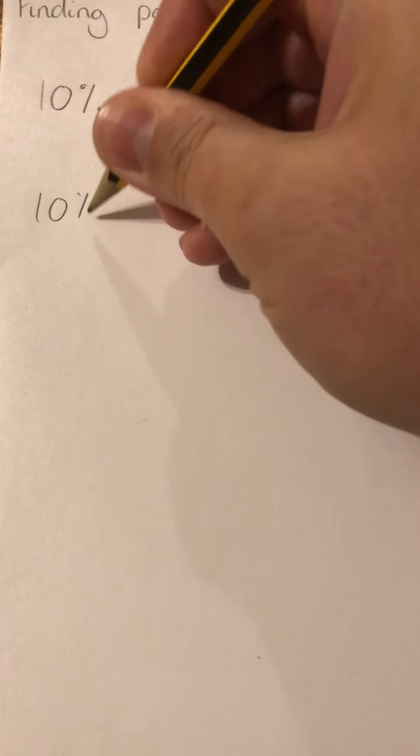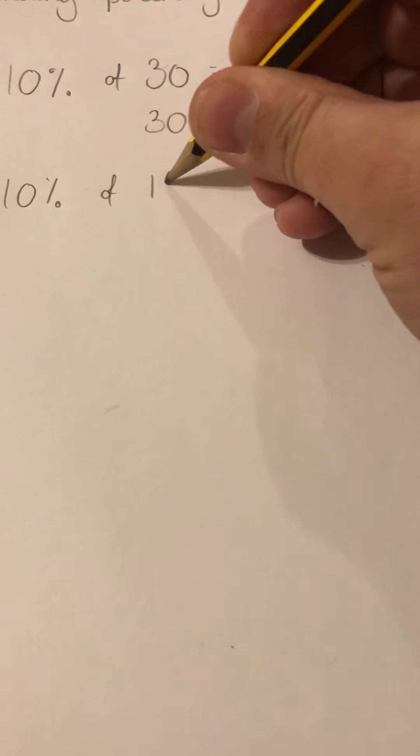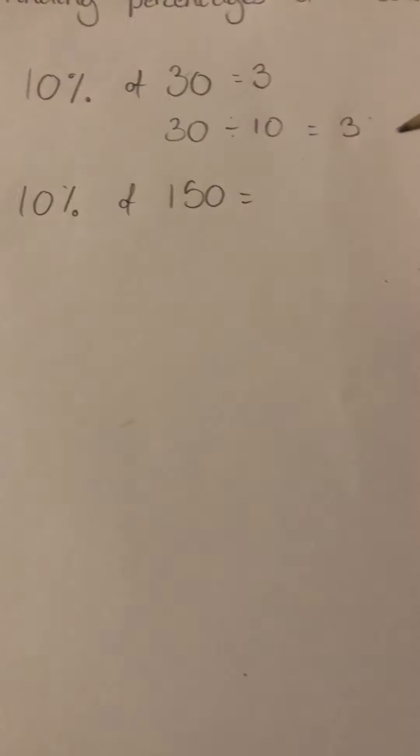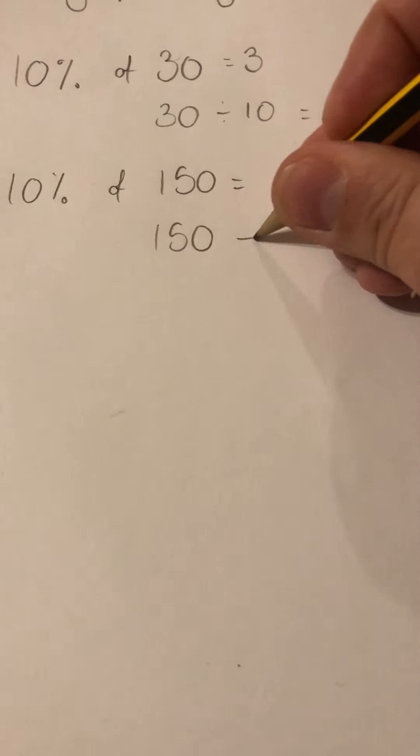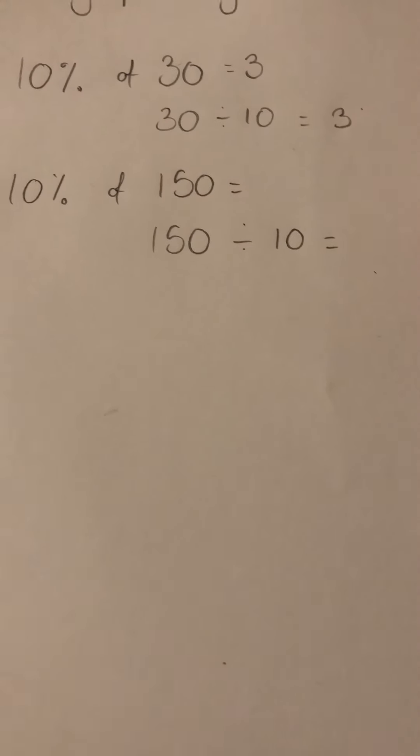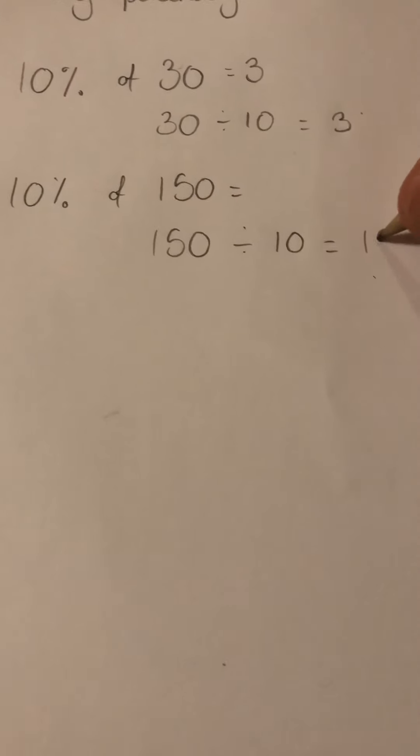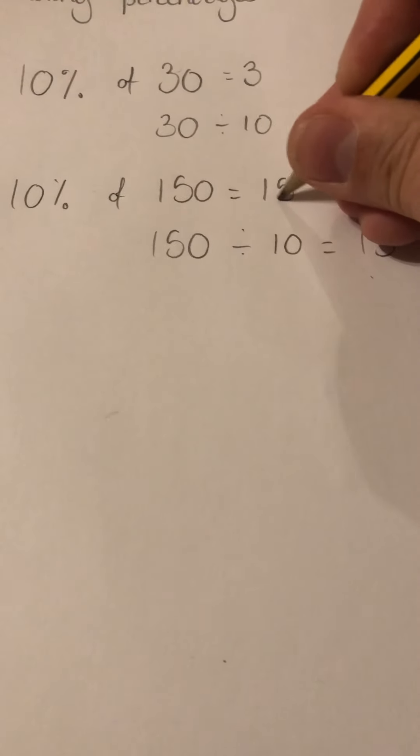That works for other numbers. So if I wanted 10% of 150, I'd follow the same pattern: 150 divided by 10 equals 15. So 10% of 150 is 15.